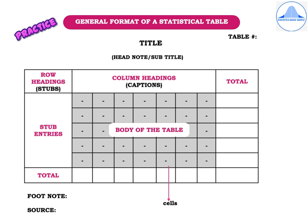Then you can observe that we have the row headings which are called stubs, and column headings which are called captions. We also have the total column and the total row, and you observe that there are many squares or rectangular boxes which are called cells. Below the table you have the footnote and the source.